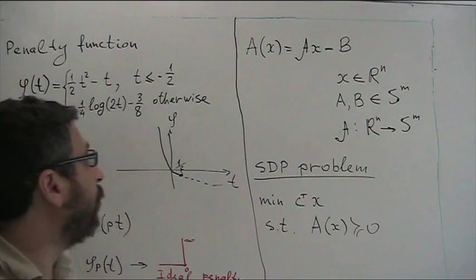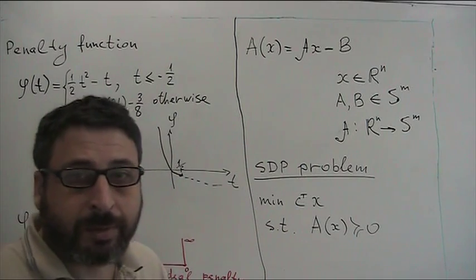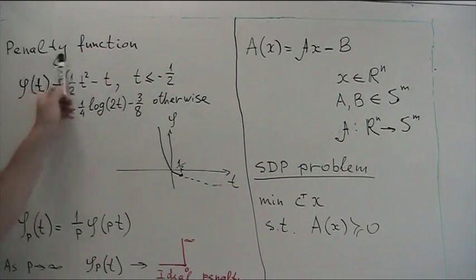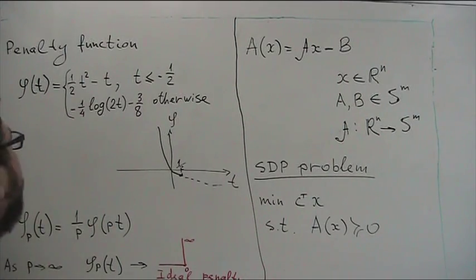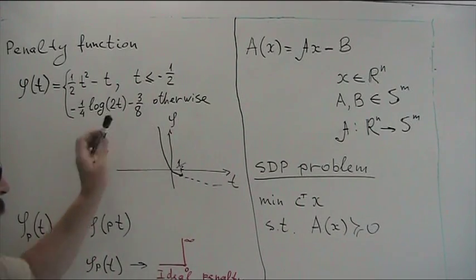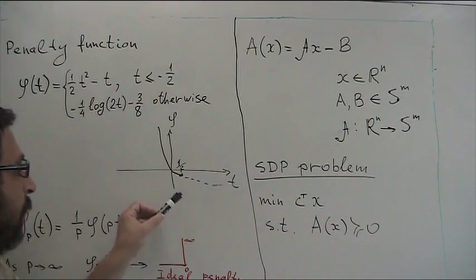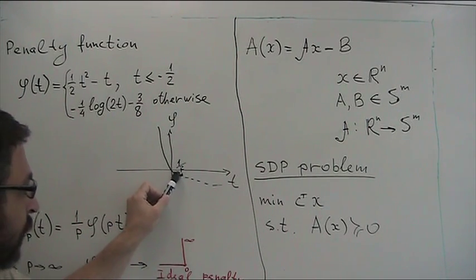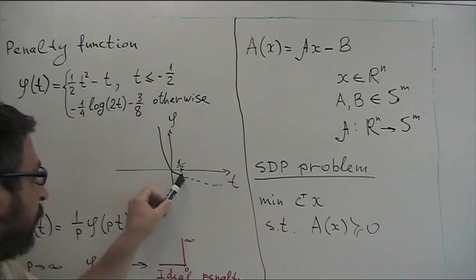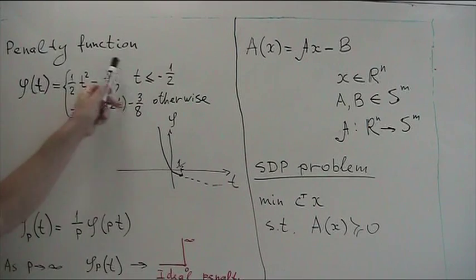We are going to solve this semi-definite program with the penalty function method. For this we will introduce a scalar penalty function — a function of one variable — which consists of two branches: a quadratic and a logarithmic one, connected smoothly up to two derivatives. Here is the explicit formula: this part is quadratic and this part is logarithmic.